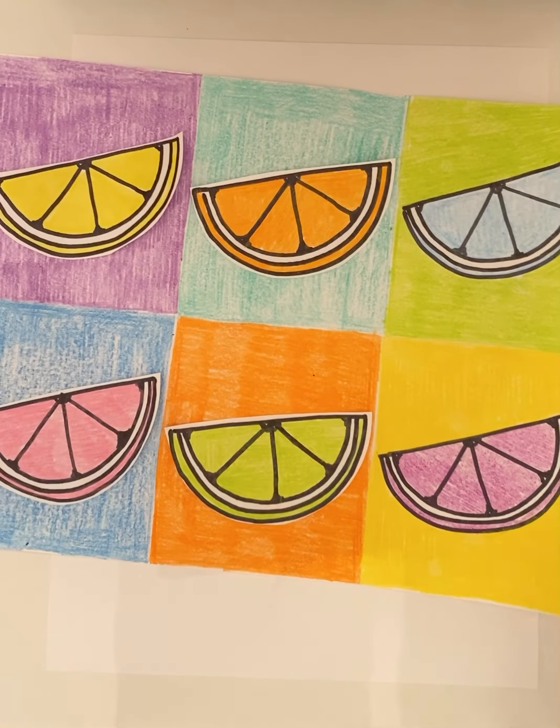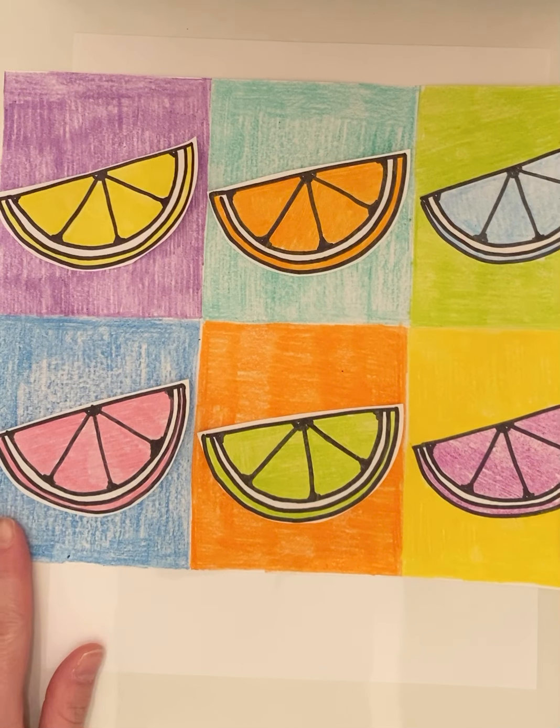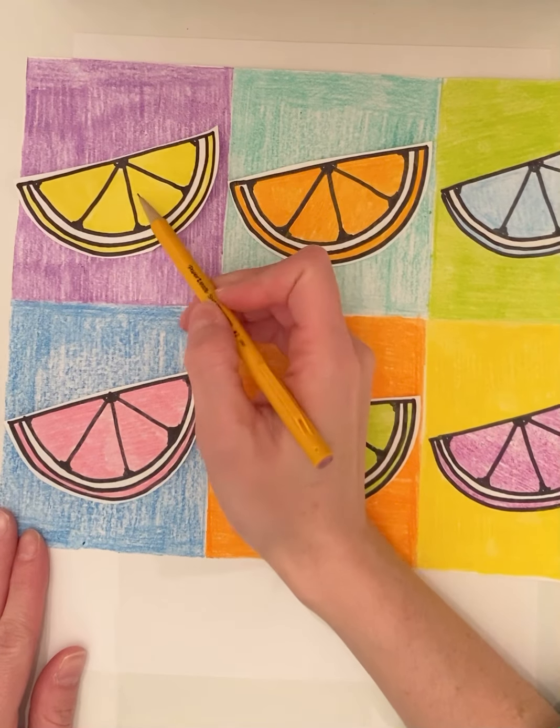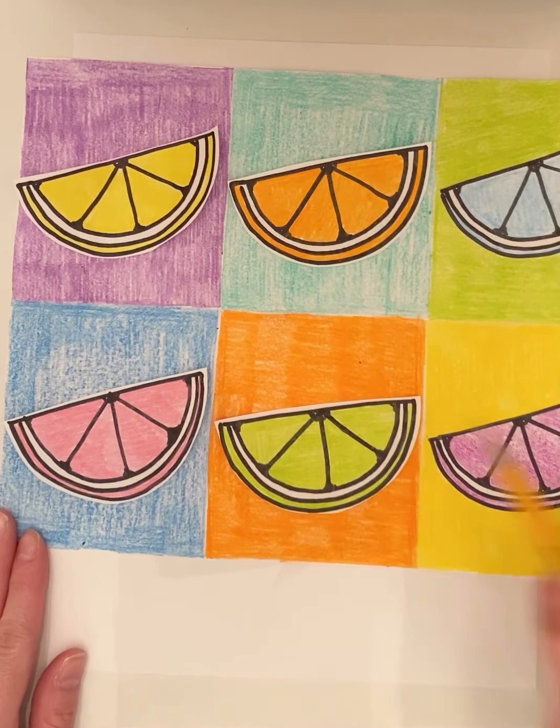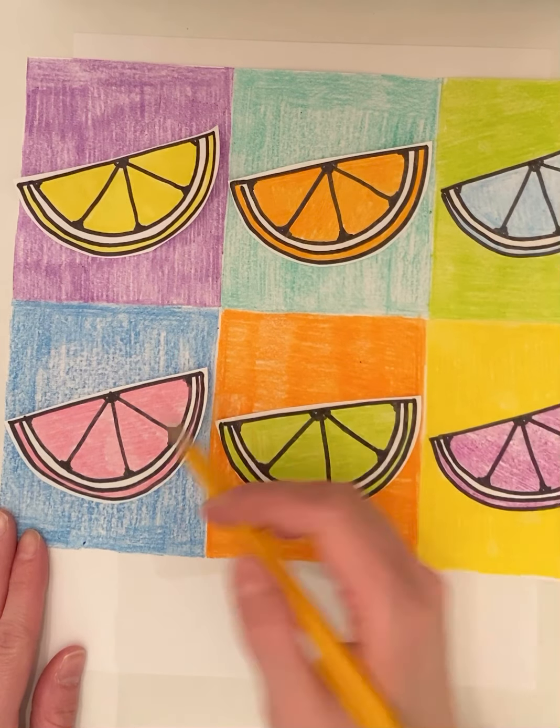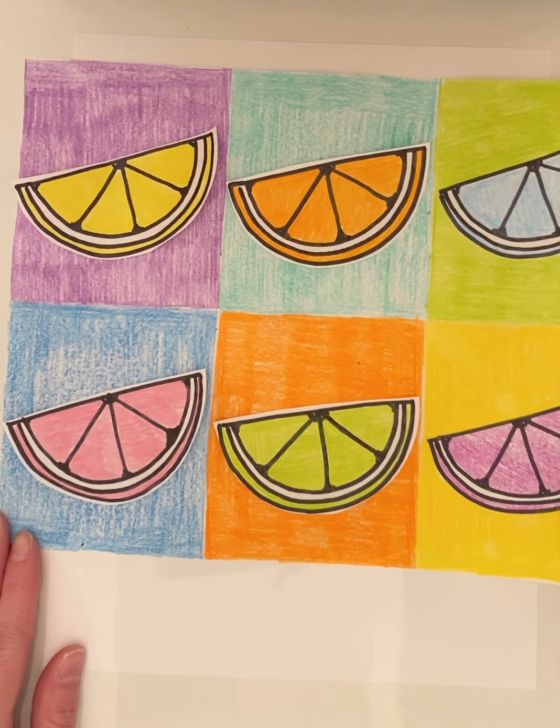And then he would use a certain screen printing process and you would see those images repeated over and over again. They would be different colors. So if you had a picture of Mickey Mouse, that would be repeated multiple times and Mickey would be a different color each time.